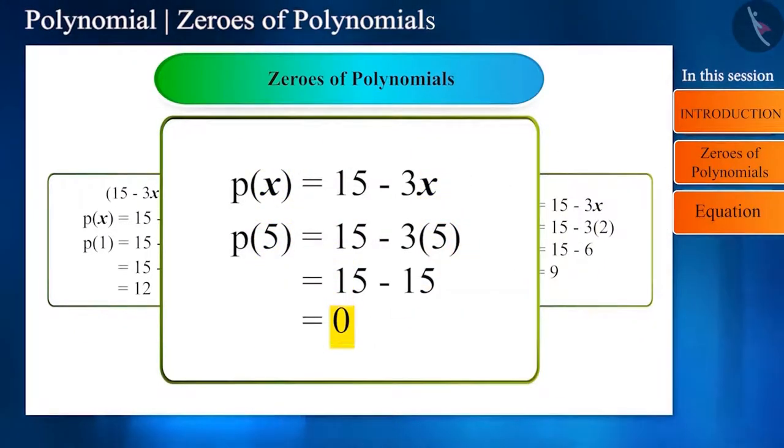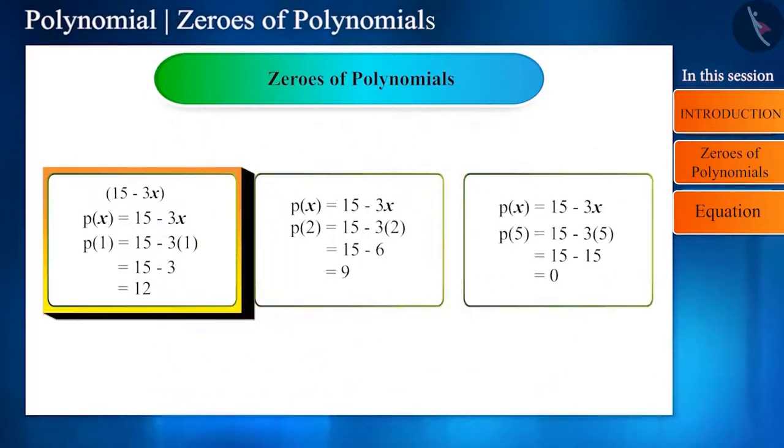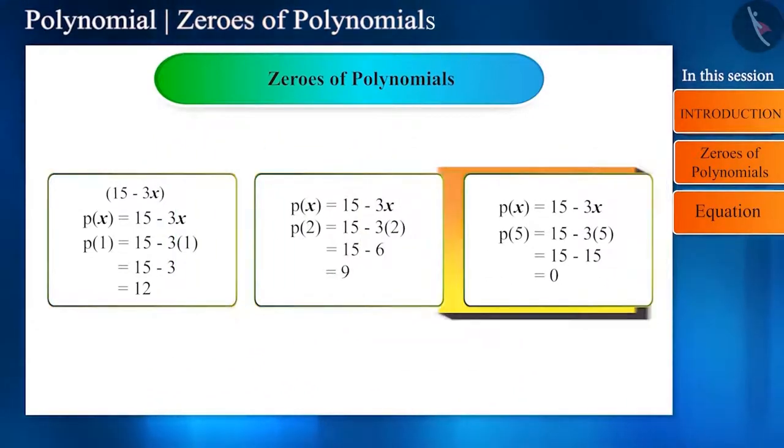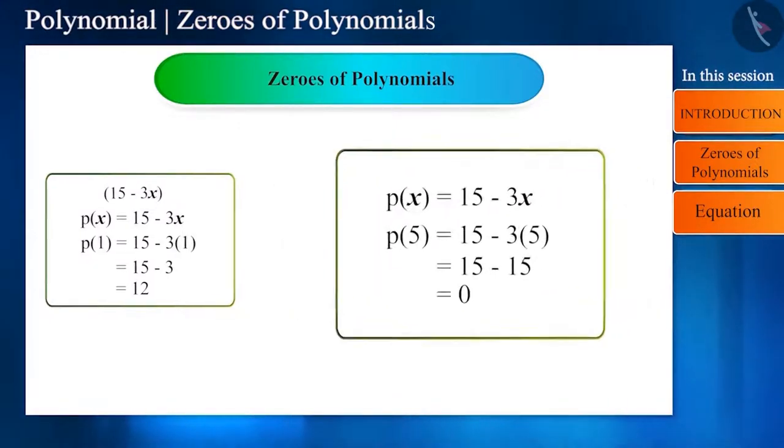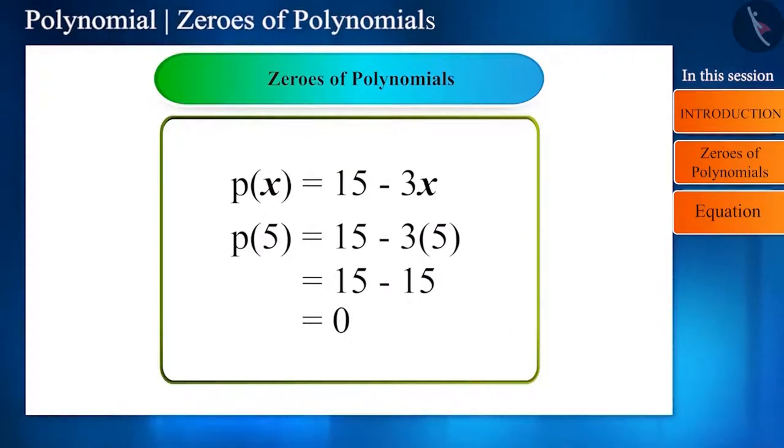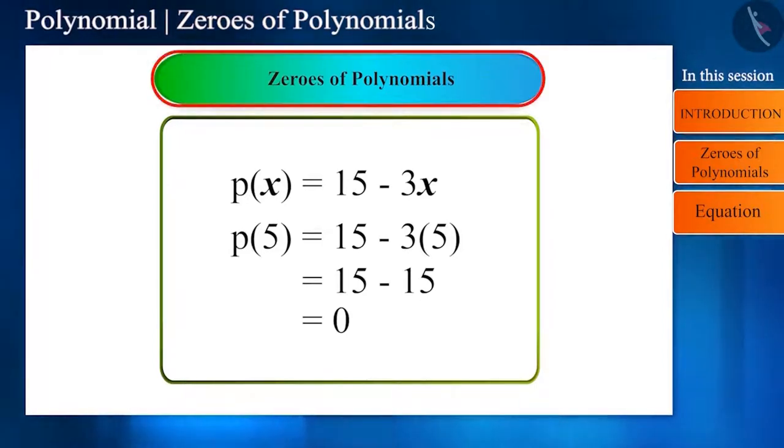The polynomial will give different values for each number. My dear friends, there will be a number that will make the value of the whole polynomial zero. Like we saw, when Rahul dropped five rupees, he did not get a single rupee. Therefore, we call such numbers as the zeros of polynomials.